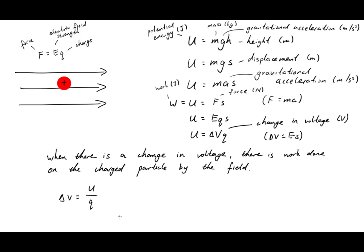Quite often, people also drop the delta. So you will often see this equation written as v equals u on q.